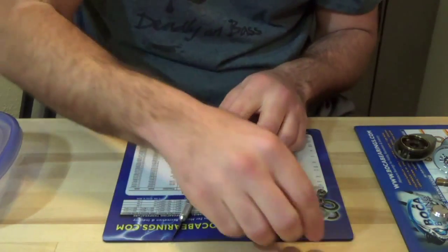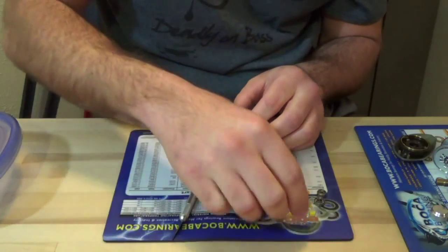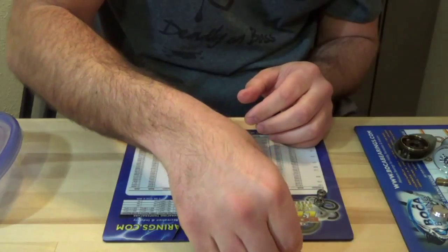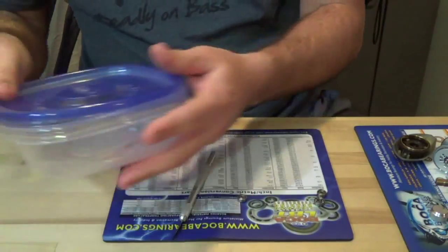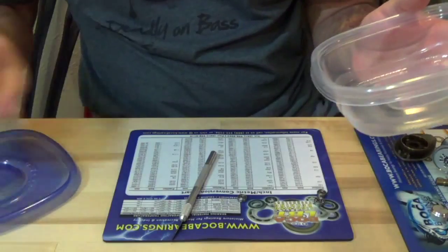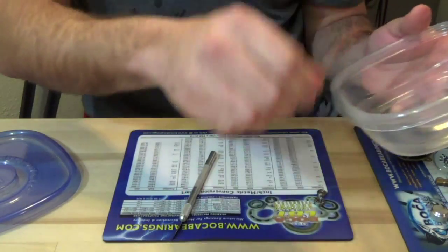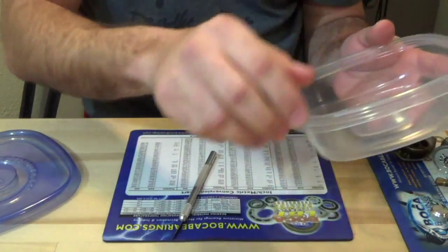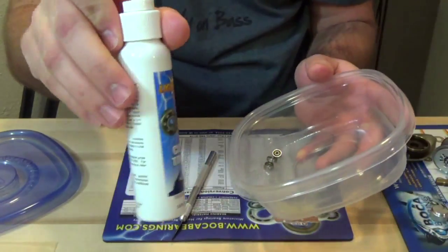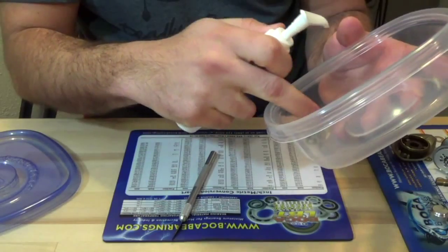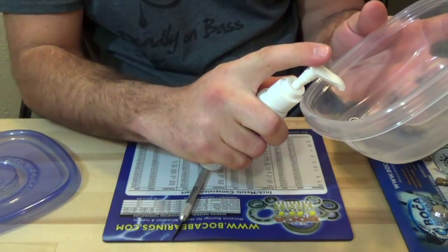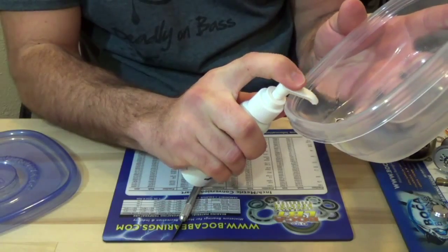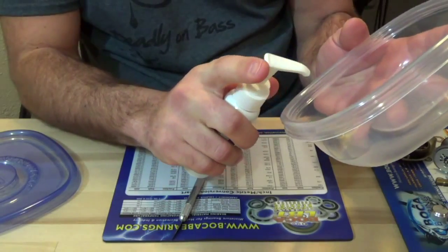I'll go ahead and set the seals aside. Now I have here a little GLAAD container. Put your bearings in the container. Get your Clean Touch. I'm just going to put just enough to cover the bearings. Three squirts.